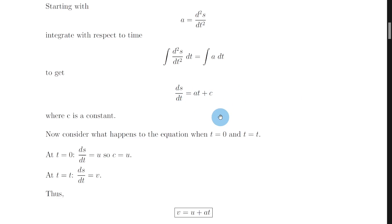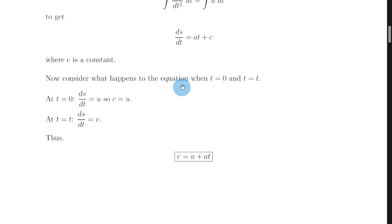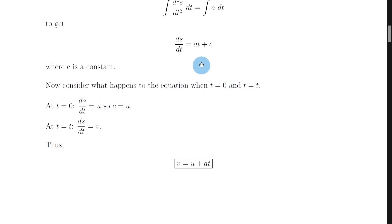So we need to introduce the v and the u. So how do we do that? Well it says here, now consider what happens to the equation when t equals zero and t equals t. Well if we plug in t equals zero into this expression, we end up with ds by dt is equal to c, the constant.